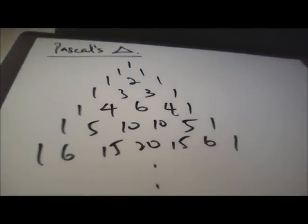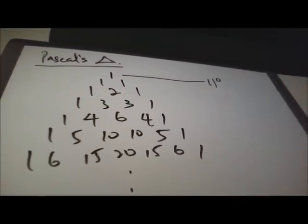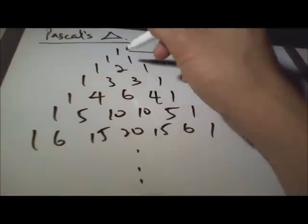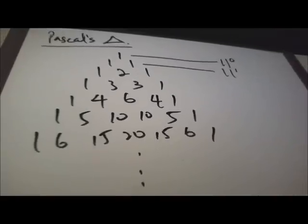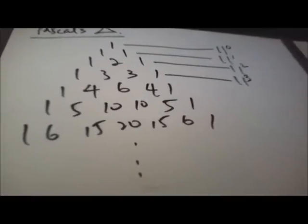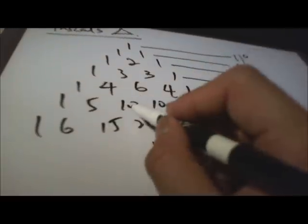Let's start from the first row. This one is equal to 11 power 0. Then 11 is 11 power 1. 121 is 11 squared. 11 cubed is 1331. And 14641 is 11 power 4. This row gives 11 power 5 and the next gives 11 power 6.